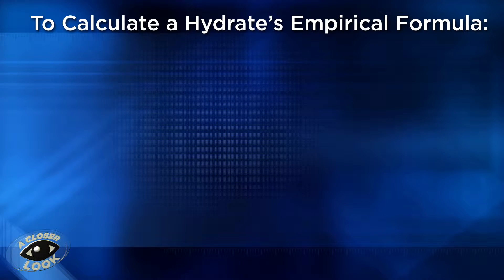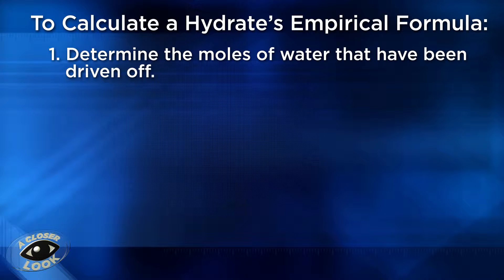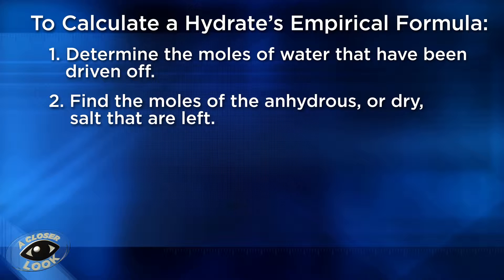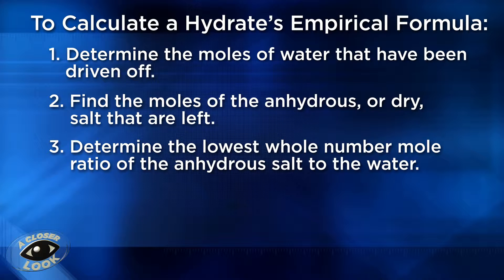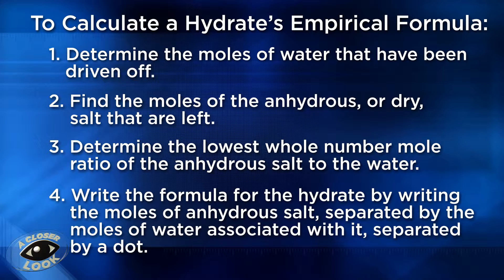To calculate a hydrate's empirical formula, first determine the moles of water that have been driven off. Then, find the moles of the anhydrous or dry salt that are left. Next, determine the lowest whole number mole ratio of the anhydrous salt to the water. Write the formula for the hydrate by writing the moles of anhydrous salt separated by the moles of water associated with it, separated by a dot.